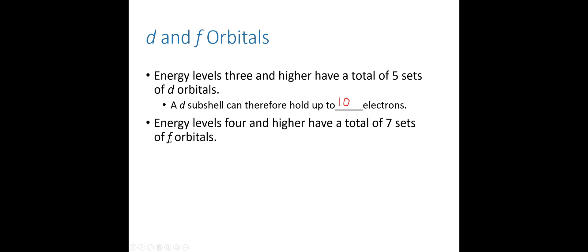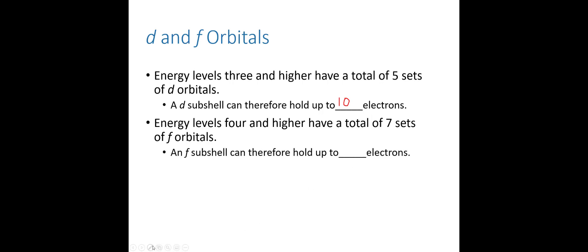We don't start getting electrons in F orbitals until shell four and higher — it's kind of like leveling up in a video game. F orbitals come in sets of seven. There's a simple pattern here: S orbitals come in sets of one, P in sets of three, D in sets of five, and F in sets of seven — just the odd numbers. So how many electrons can each hold? Each orbital holds up to two, so F sub-shells can hold 14 electrons.